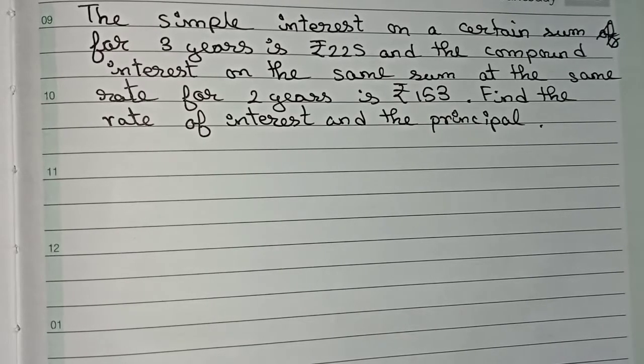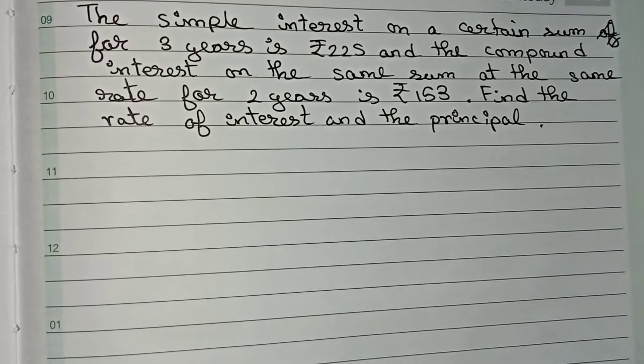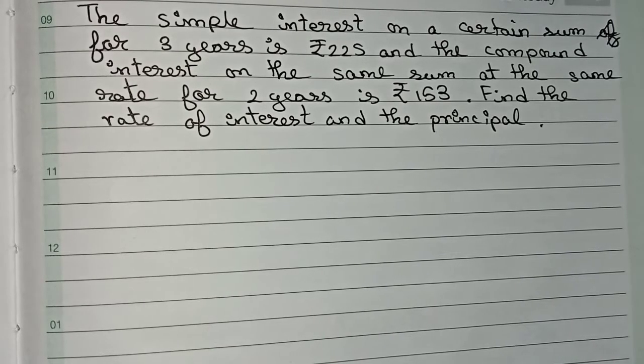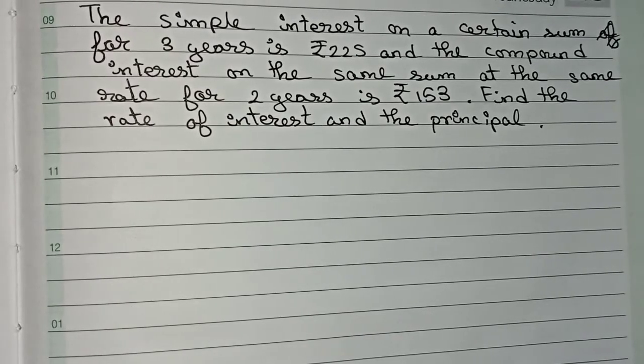Hello guys, welcome to this video. In this video our question is: the simple interest on a certain sum of money for 3 years is ₹225, and the compound interest on the same sum at the same rate for 2 years is ₹153. Find the rate of interest and the principal.